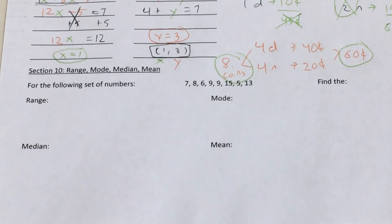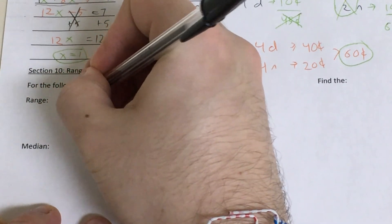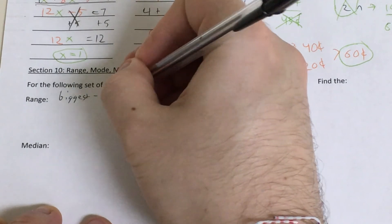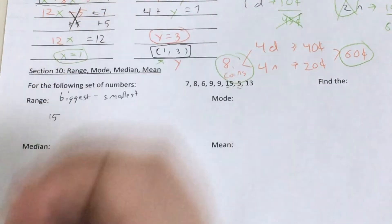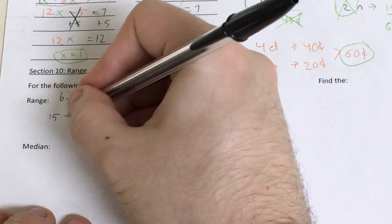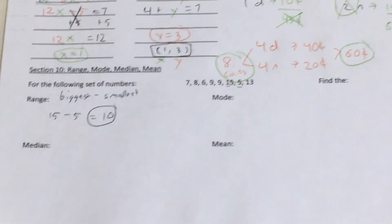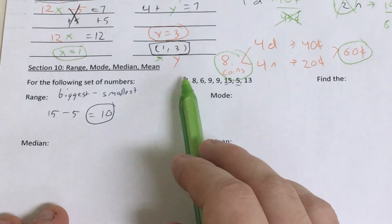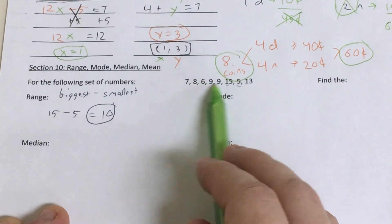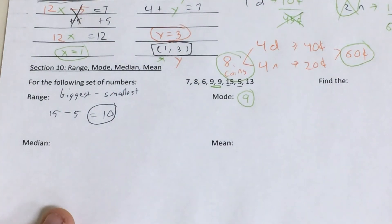So now let's move on to the very last section on range, mode, median, and mean. I have a set of numbers, and I need to find the range, the mode, the median, and the mean. The range involves just a little bit of math. I have to find my biggest number and subtract from it my smallest number. My biggest number is 15. My smallest number is going to be 5. So biggest minus smallest is going to get me 15 minus 5. So my range of these numbers is just going to be 10. My mode is actually even easier. It's the number that just shows up the largest number of times. So if I'm looking at this set of numbers, 7 shows up once, 8 shows up once, 6 shows up once, 9 shows up twice, 15, 5, and 13 show up once each. So my mode is just going to be 9.